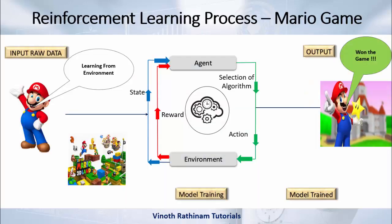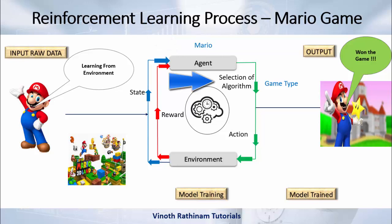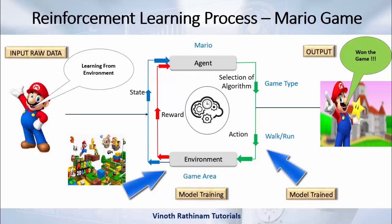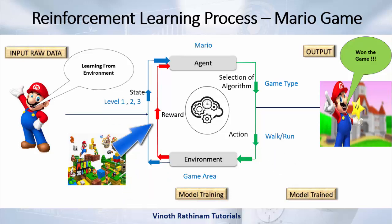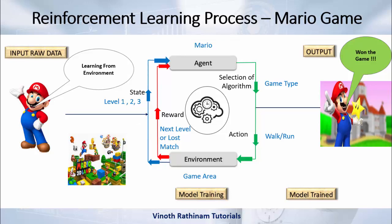For those who don't know much about chess, the Mario example will be clearer — and definitely everyone has played this game at least once. Here Mario is the agent. It selects the game type, like whether to score maximum points or just complete the level — that is compared to the selection of algorithm. Then it starts running in the Mario game environment. If Mario dies during the game it gets a penalty; if it reaches the end of the level it is rewarded, so it progresses to the next level — level 1, level 2, level 3.